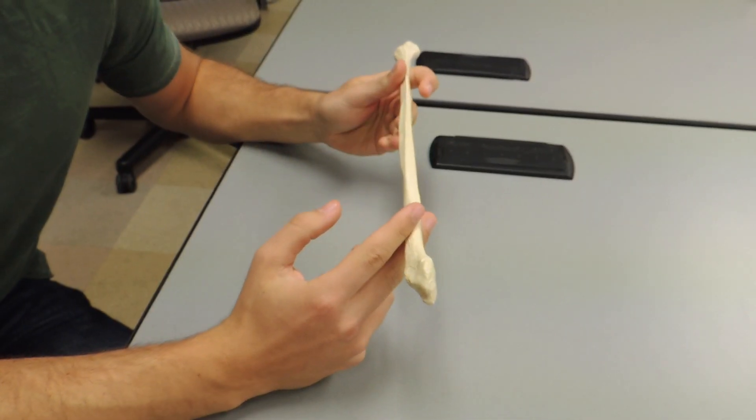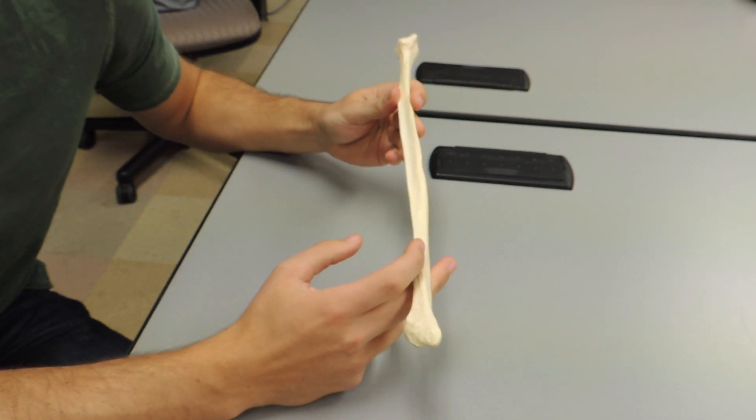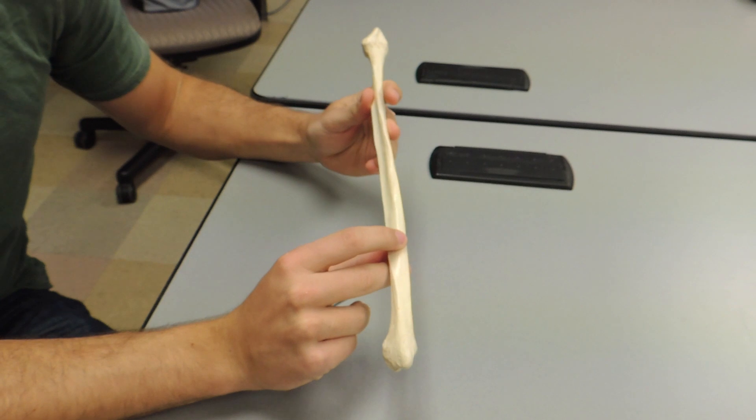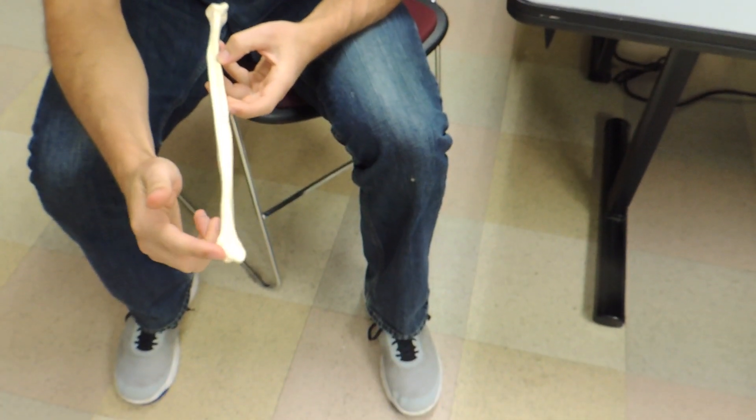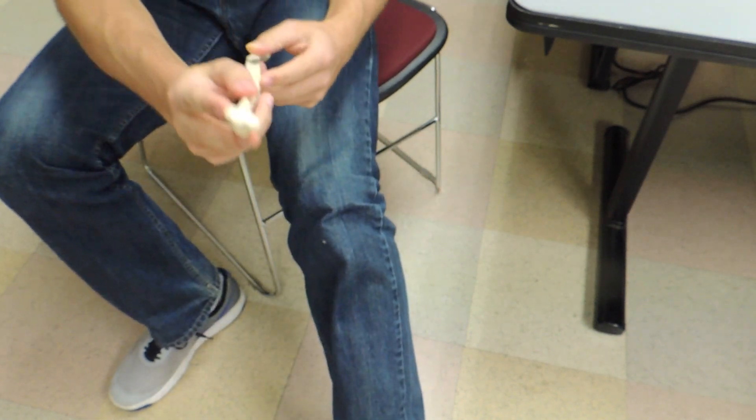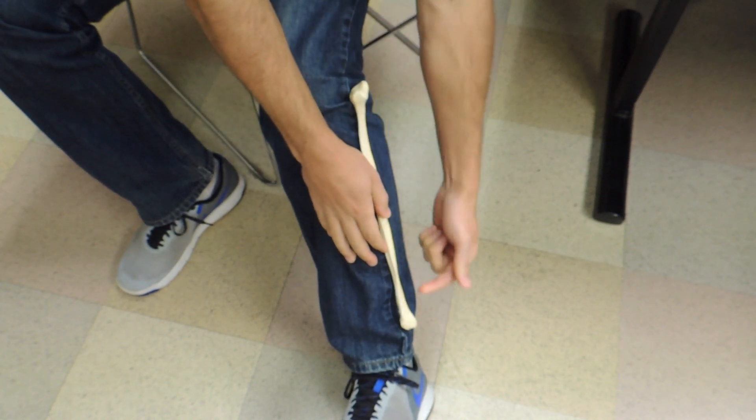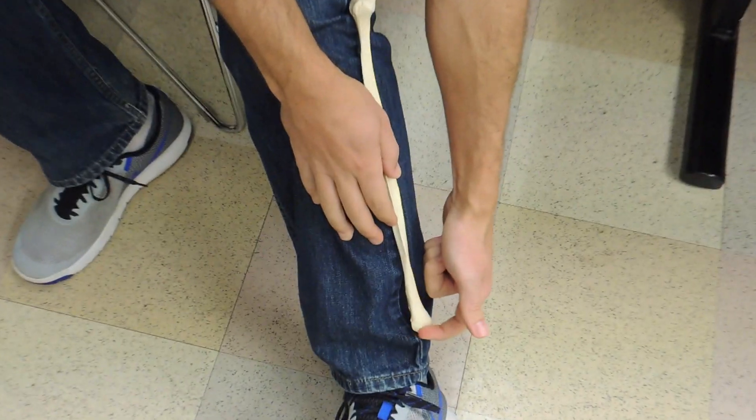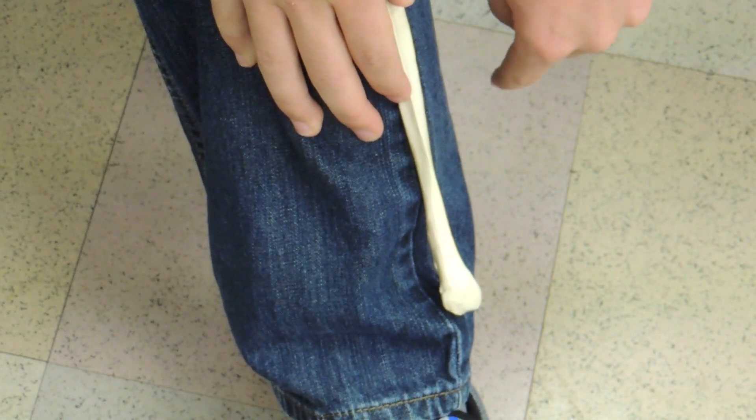And now the hardest part with the fibula is identifying left from right. So in order to do that, I would suggest placing it on your leg. Once you identify the lateral malleolus, you want to place it on the lateral side of your leg, like so, and you want that angle of the malleolus to point backwards or posteriorly.